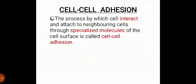Cell-to-cell adhesion is of two types: direct contact and indirect contact. In direct contact, a neighboring cell is in immediate contact with another neighboring cell. In indirect contact, animals usually need the extracellular matrix for stimulation or adhesion.